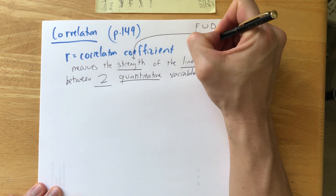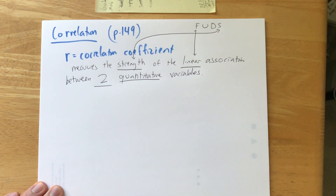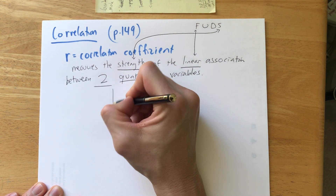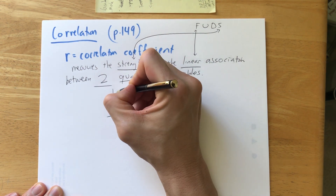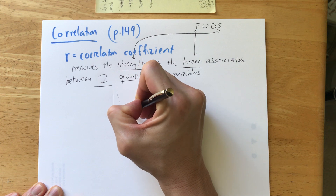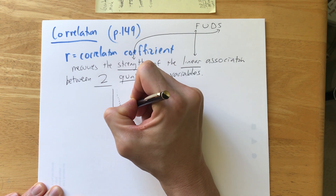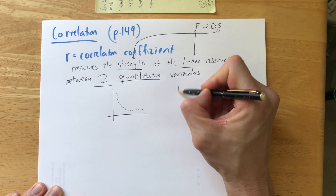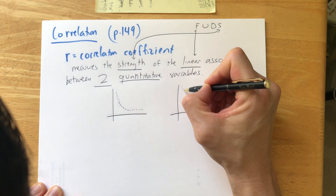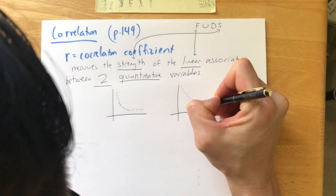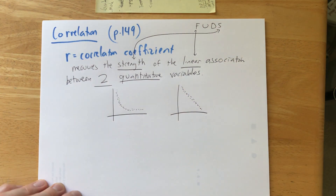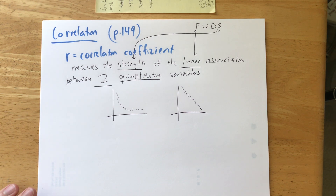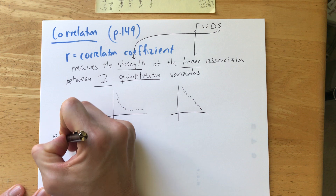Key things again: quantitative, there are two of them, and linear — I cannot stress this enough. When you think about form, you could have an association that looks like this — curved — and that's a very strong association. However, your correlation is going to be weak because it's not linear. We're looking for things that form a straight line.